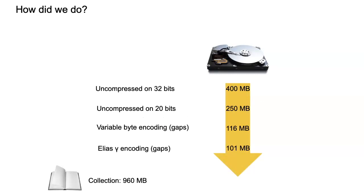Looking at the progress on compressing the posting list: originally we had 400 megabytes in our example, uncompressed on 32 bits. Bringing it down to 20 bits gives 250 megabytes. With variable byte encoding of the gaps it's down to 116, and gamma encoding makes it even better at 101 megabytes.